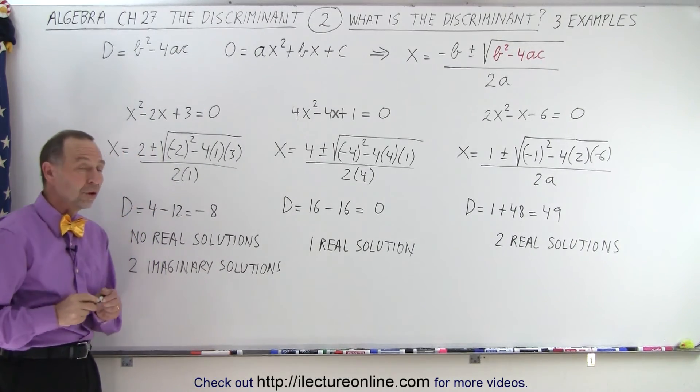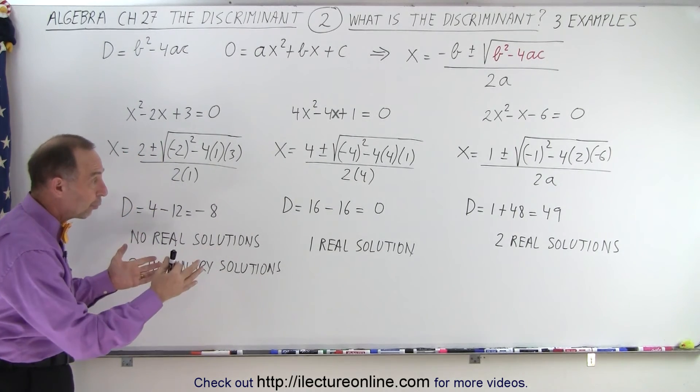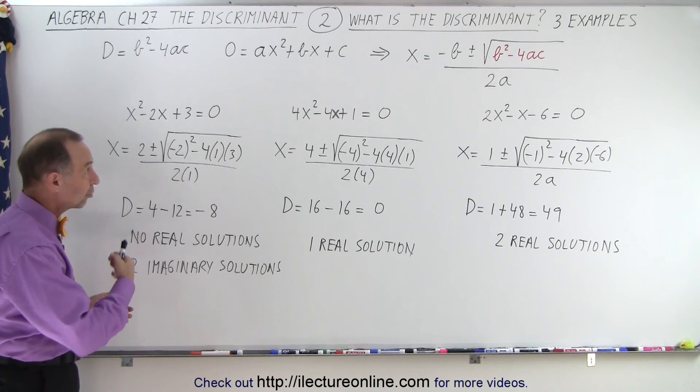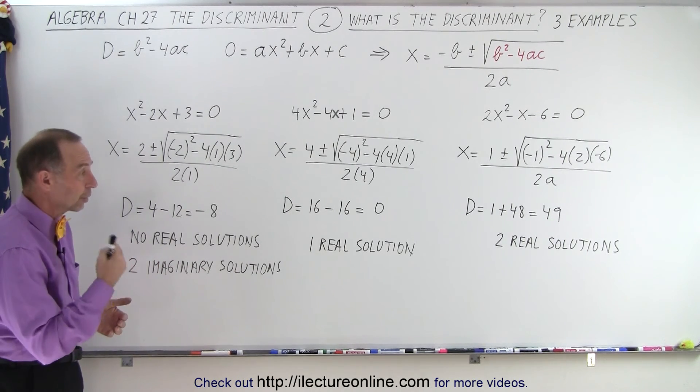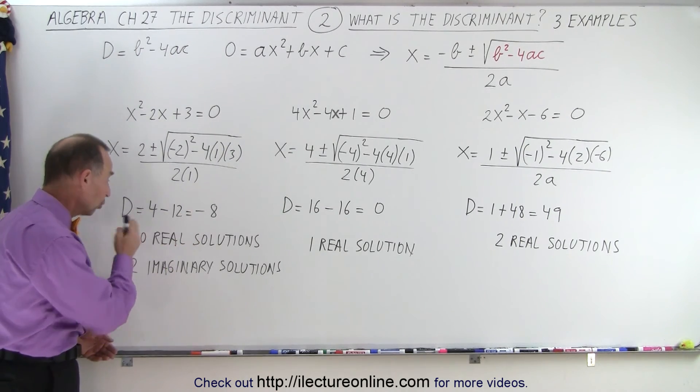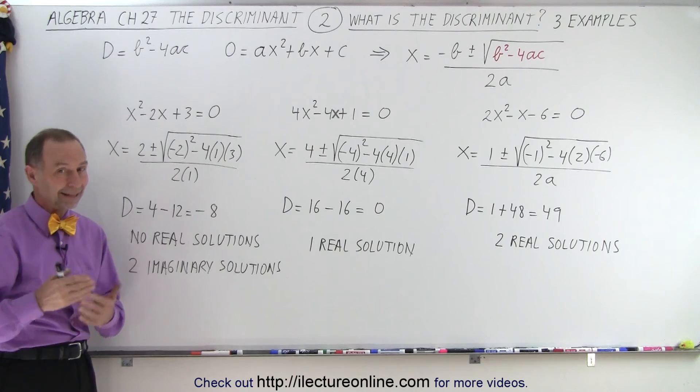That is how we can use the discriminant and what it stands for to predict what kind of results we'll get when we solve quadratic equations. We can very quickly see if there are two real solutions, only one real solution, or no real solutions. That is how it's done.